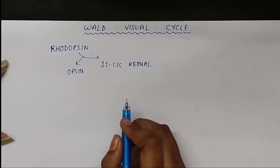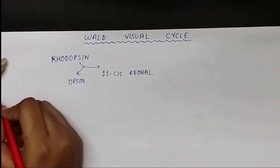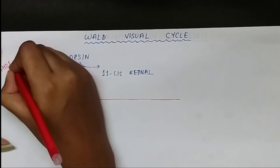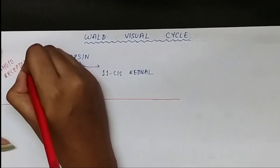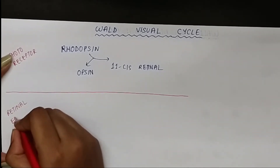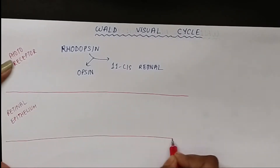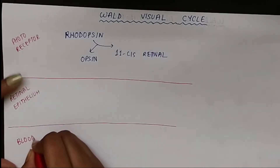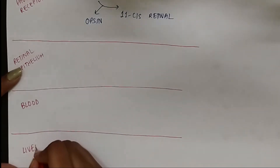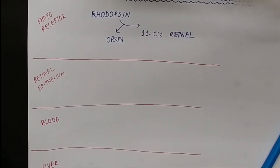The visual cycle can be divided into four parts. First, the photoreceptor; next, the retinal epithelium; then, the blood; and finally, the liver. So the cycle proceeds first in the photoreceptor, then in the retinal epithelium, then in the blood, and next in the liver.